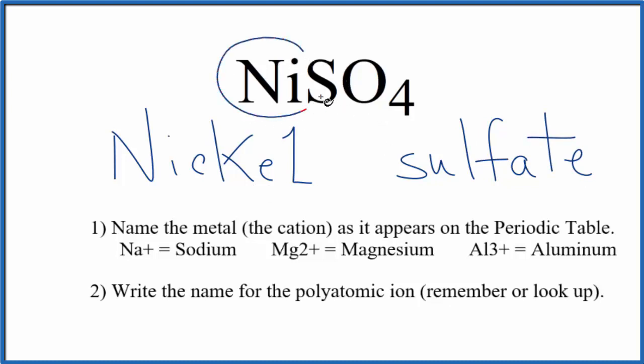But nickel, we said, is a transition metal. Because of that, we don't really know what the charge is going to be unless we look at what it's bonded to. Here, it's bonded to a sulfate polyatomic ion.